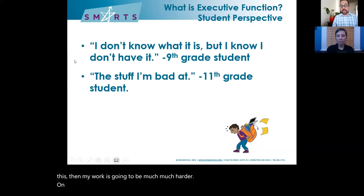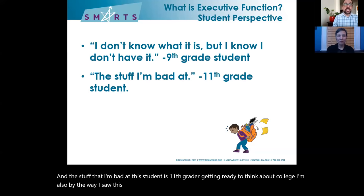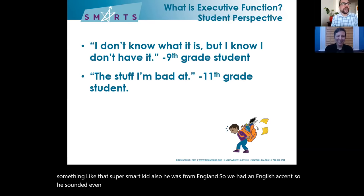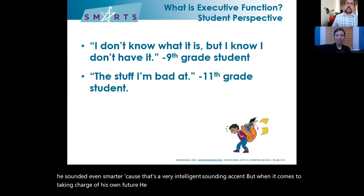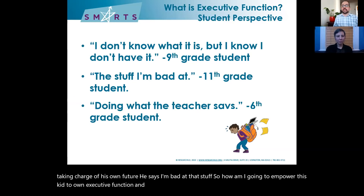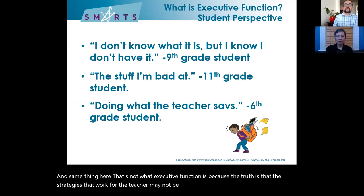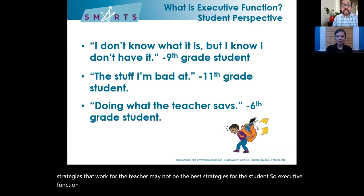Another student — an 11th grader getting ready to think about college — said executive function is 'the stuff that I'm bad at.' This kid's verbal IQ was off the charts, around 121, a super smart kid. But when it comes to taking charge of his own future, he says, 'I'm bad at that stuff.' And a third student said executive function is 'doing whatever the teacher says' — but that's not what it is, because the strategies that work for the teacher may not be the best strategies for the student. Executive function is about empowering students, not about weaknesses.